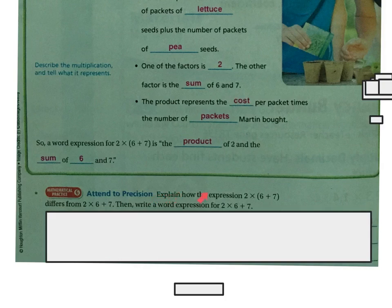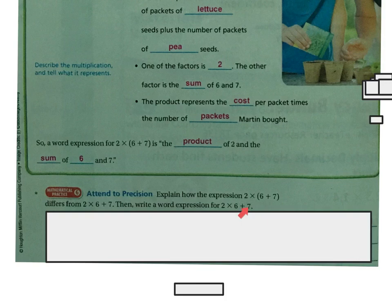Now explain how the expression two times parentheses six plus seven differs from two times six plus seven, then write a word expression for two times six plus seven. If I were to do two times six plus seven, I'd have to do two times six first, which would get me 12, plus seven, which would get me 19. That's a completely different answer than doing six plus seven first and then multiplying that times two.